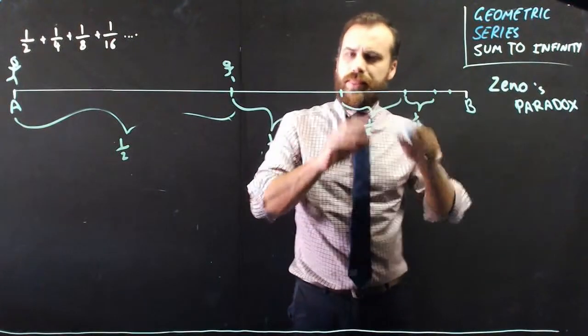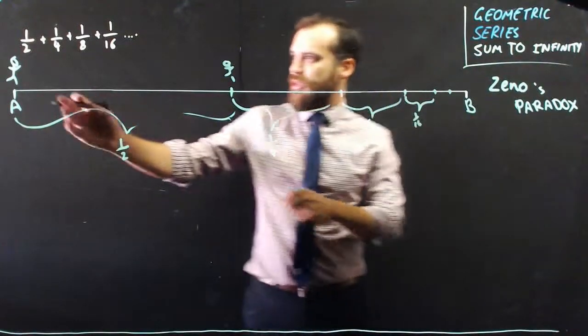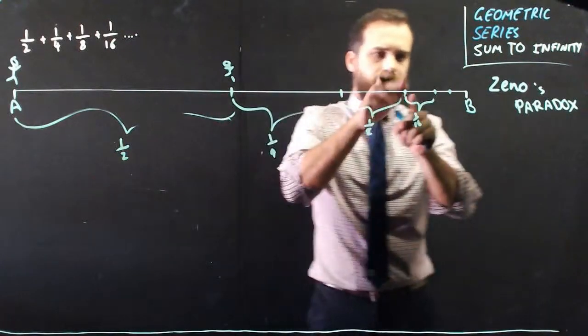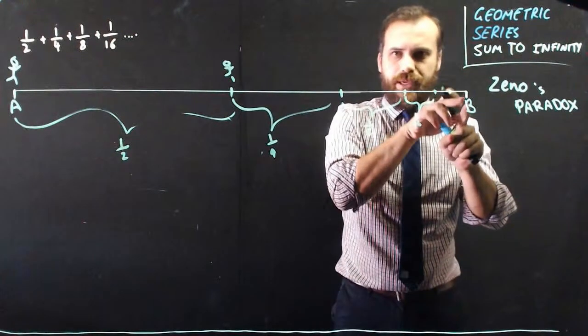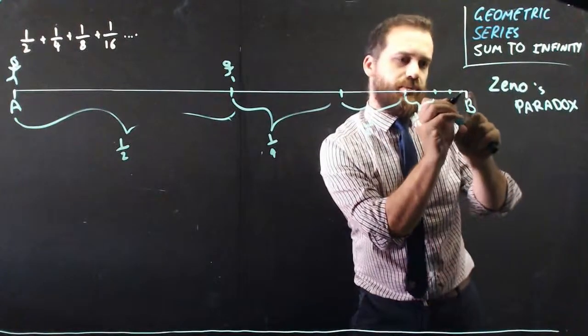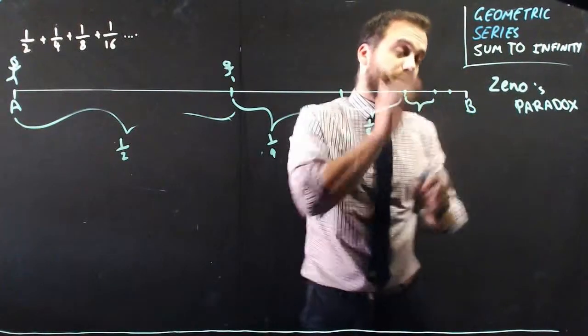He never, if, this is what Zeno said, if he has to pass through an infinite number of points to get to point B, which he does, because every time he halves it, he gets closer and closer and closer, but he never quite gets there.